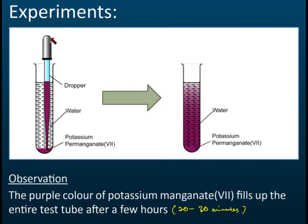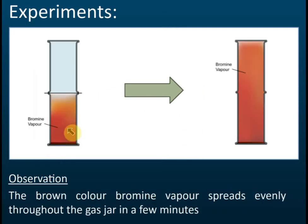The purple potassium permanganate diffuses throughout the whole water. You can use any colored liquid, but in SPM exams there are a few substances with color you need to know. Copper sulfate is one — it is blue in color. You need to memorize the colors of copper sulfate and potassium permanganate, as exams often ask about them.